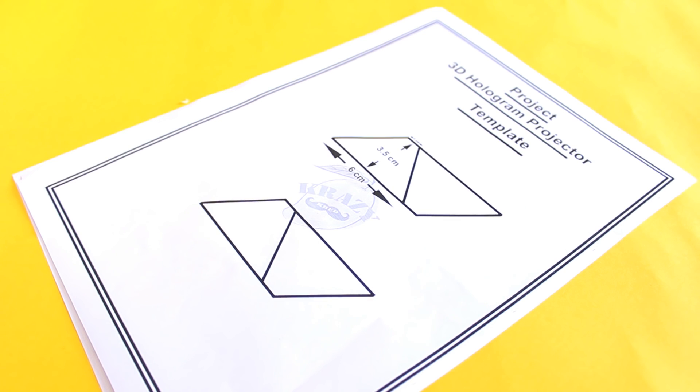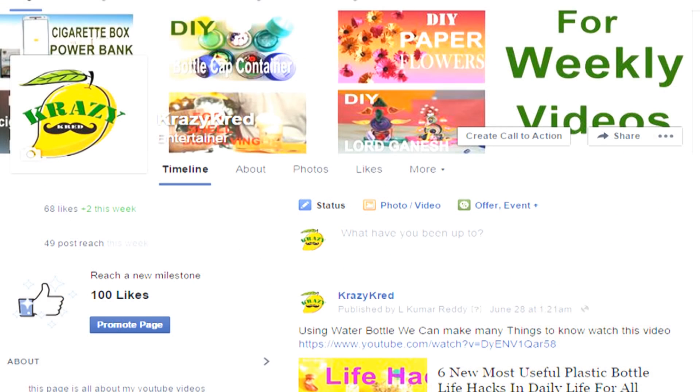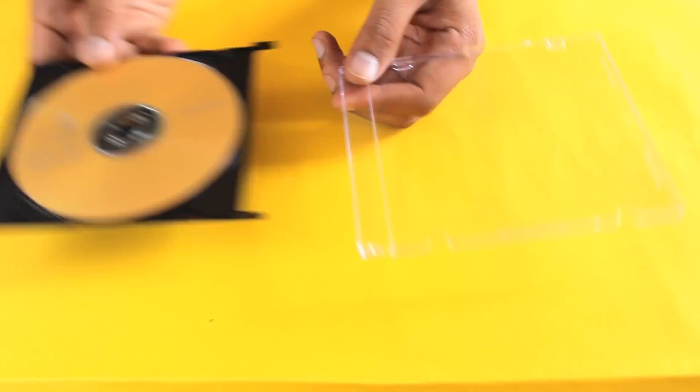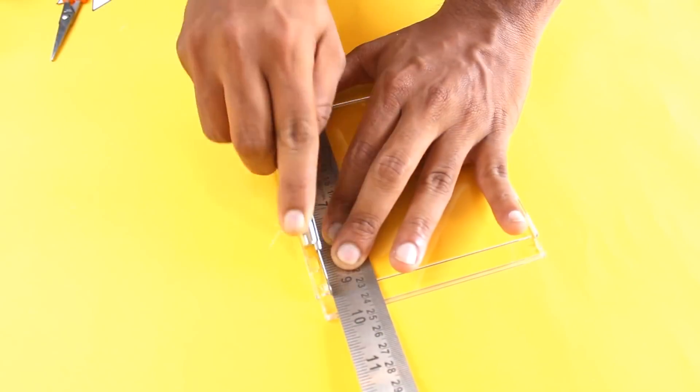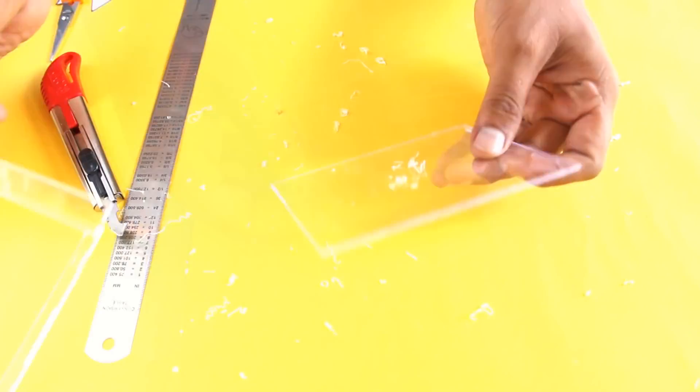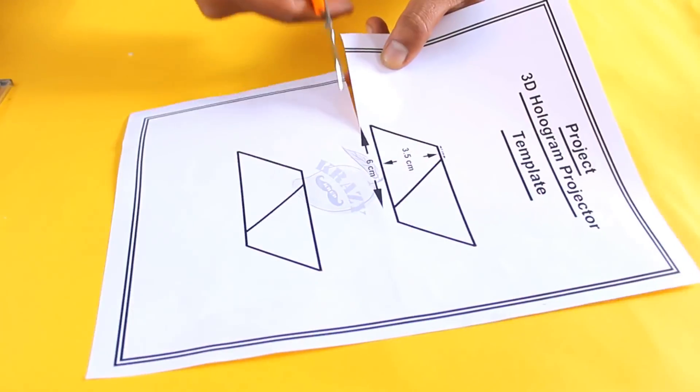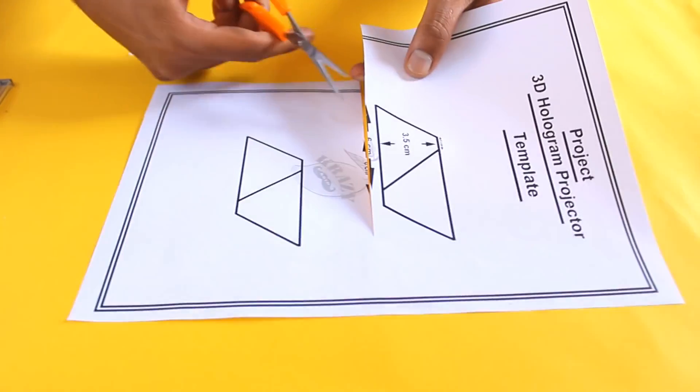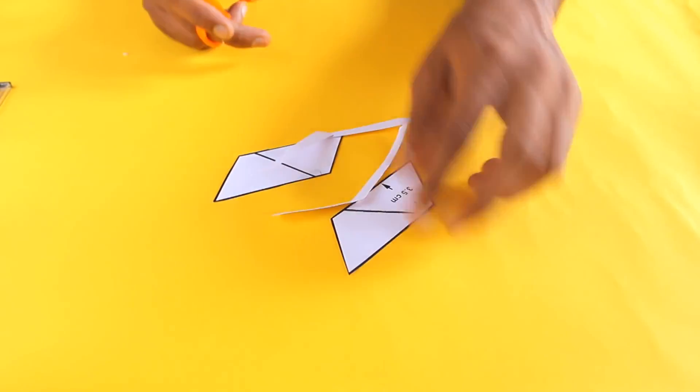First, download the free holographic projector template from my Facebook page Krazy Kred, link in the description below. Remove the four sides of the CD case to get a flat sheet like this. Now cut the template and paste it over the CD case or any plastic sheet.